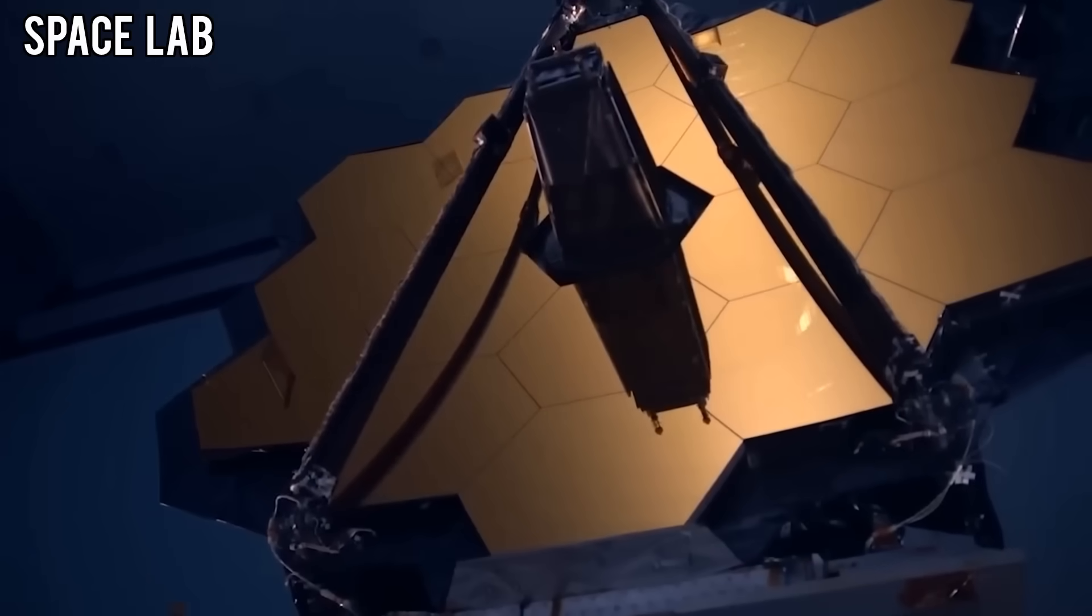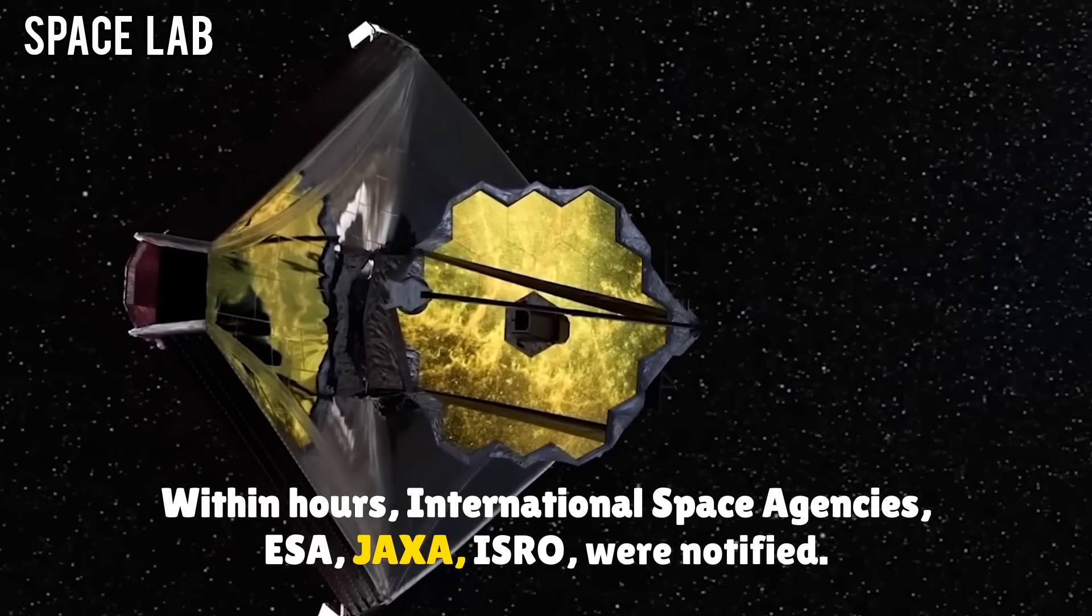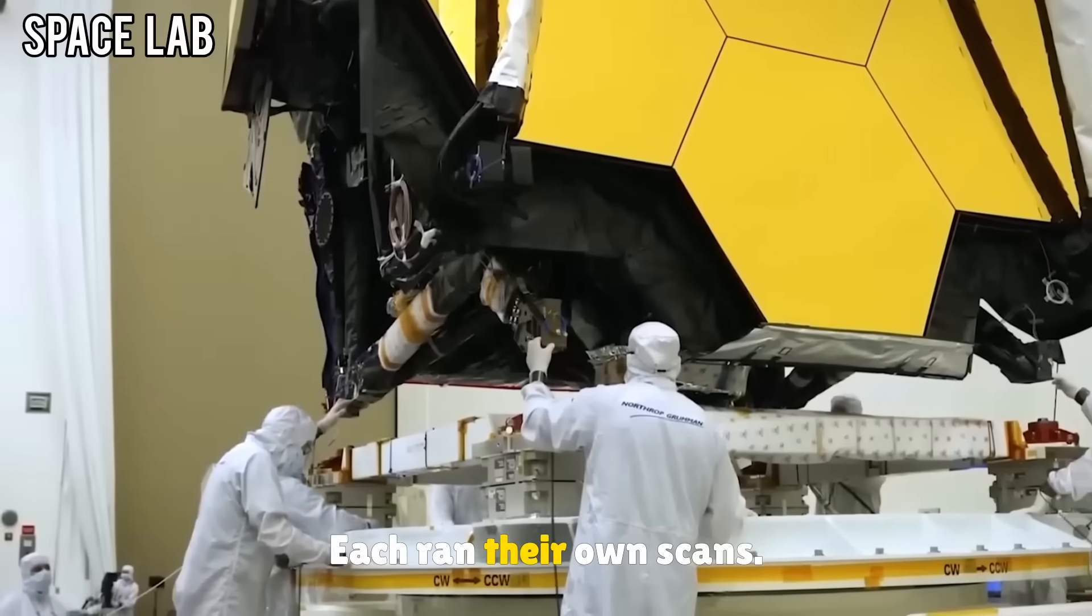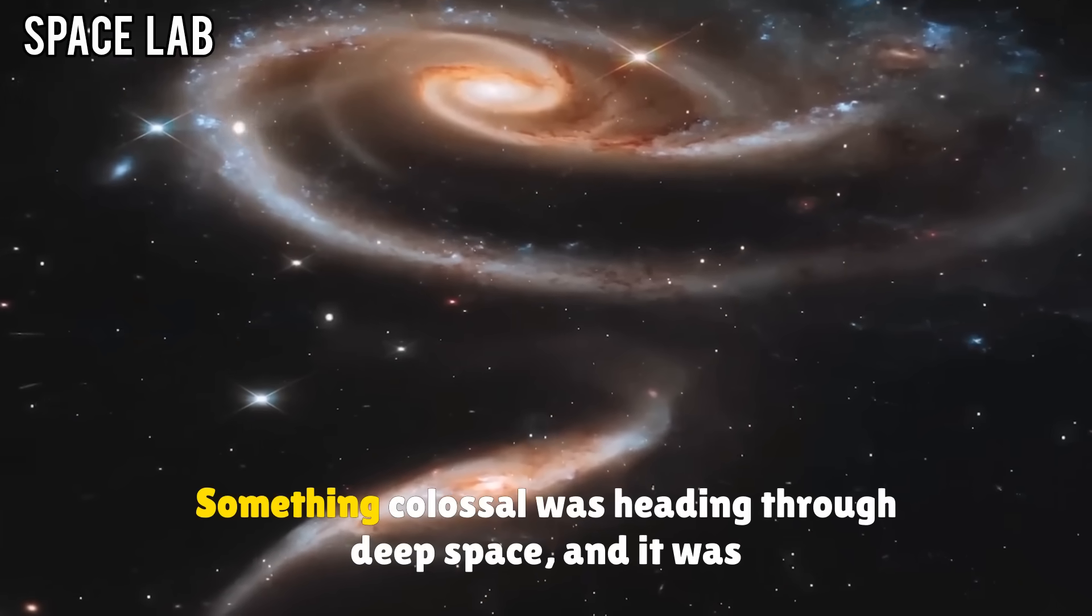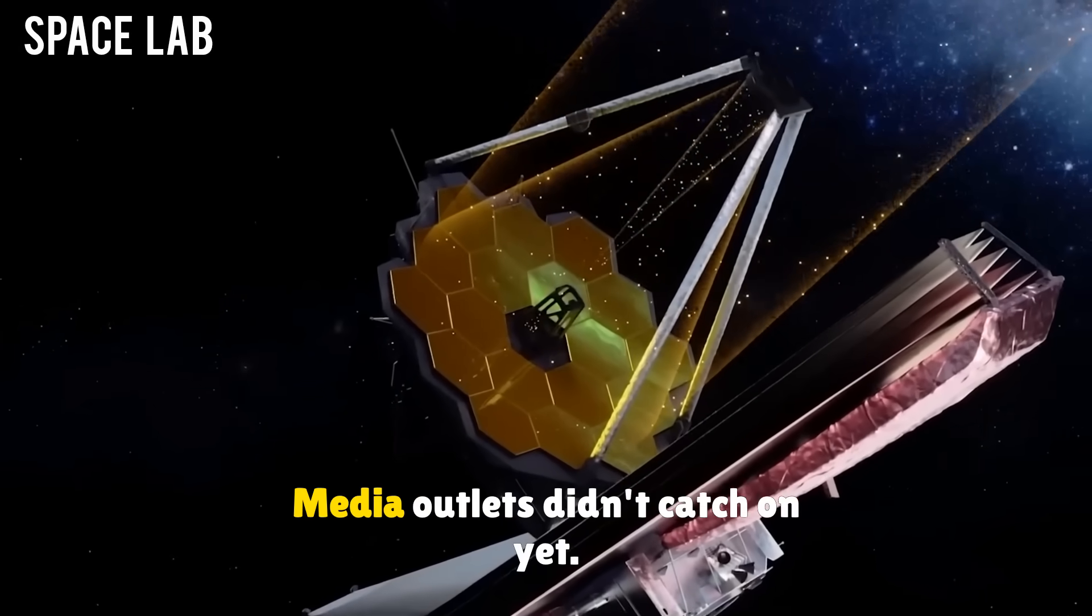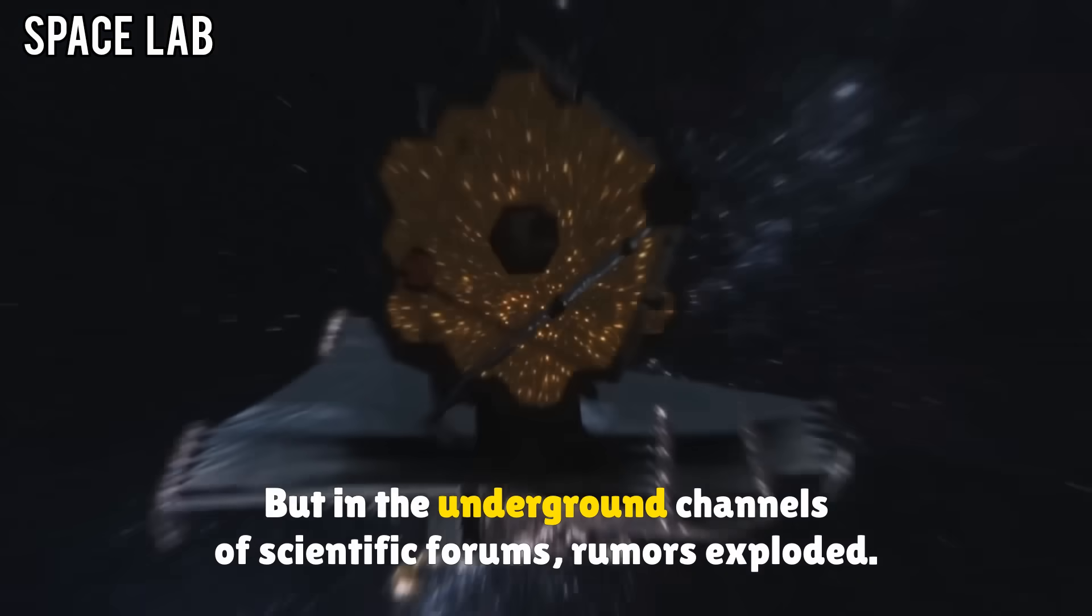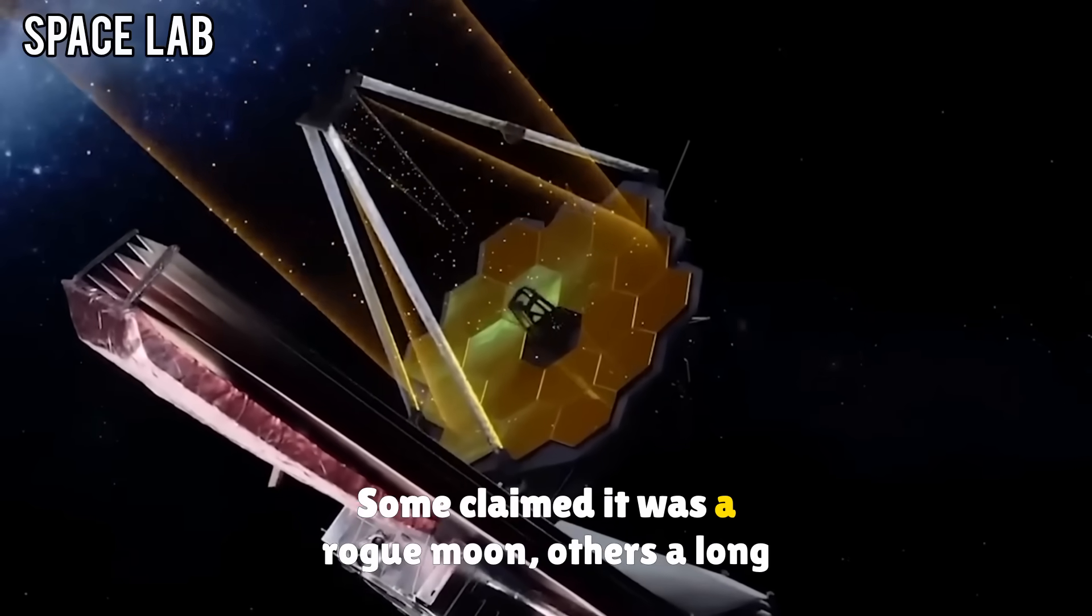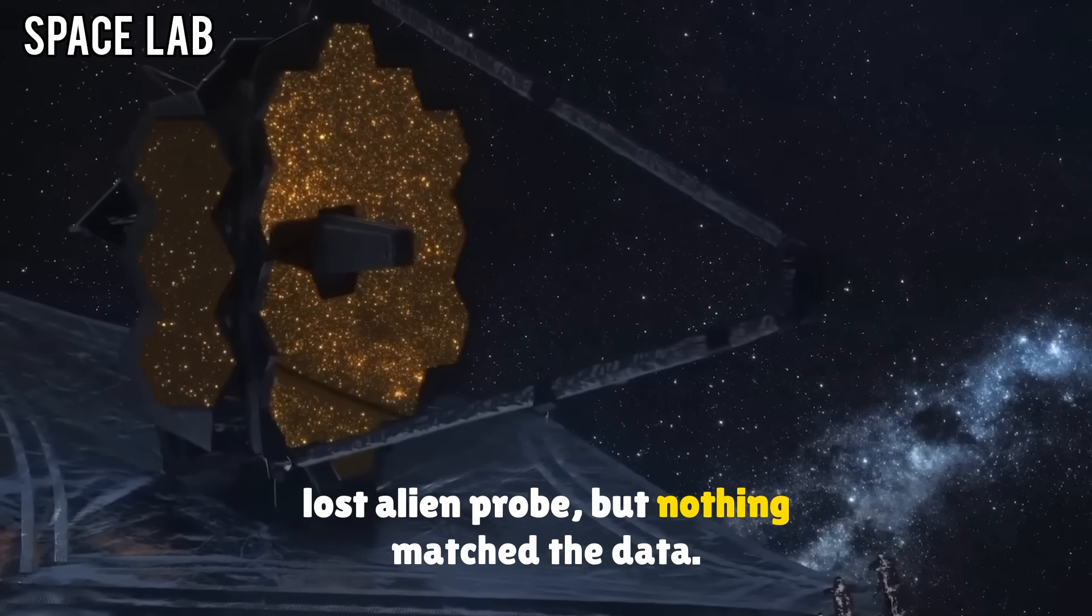Within hours, international space agencies, ESA, JAXA, ISRO, were notified. Each ran their own scans. Each confirmed the same horrifying truth: something colossal was heading through deep space, and it was accelerating. Media outlets didn't catch on yet. The public didn't know. But in the underground channels of scientific forums, rumors exploded. Some claimed it was a rogue moon, others a long-lost alien probe. But nothing matched the data.